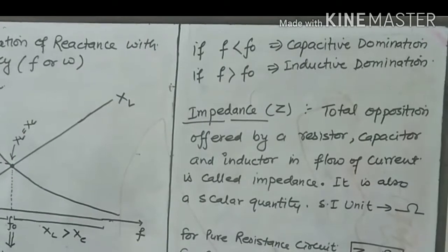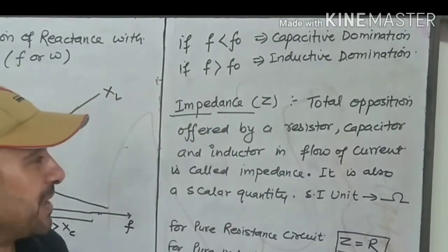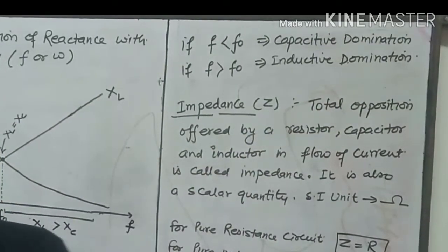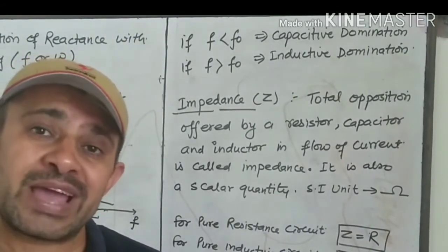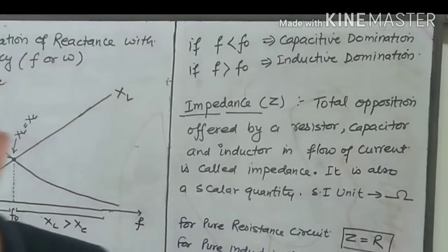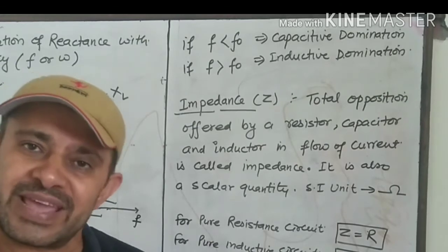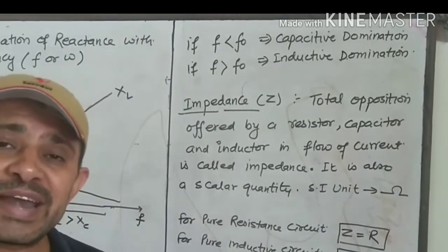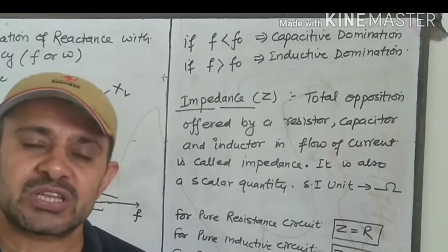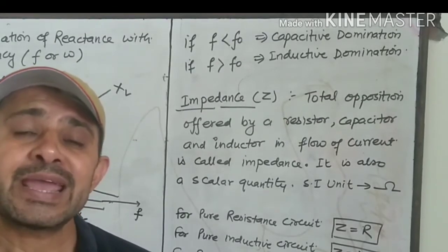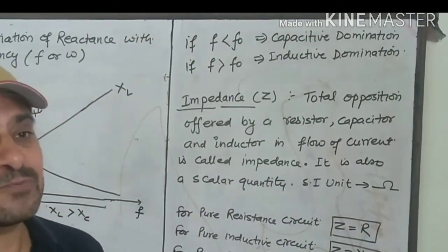Now we move on to a very important topic: impedance. Impedance is denoted by Z and it is the total opposition offered by any combination of resistance, capacitance, or inductance in an AC circuit — whether all three together or individually. Impedance is the net resultant of reactance and resistance — the total resistive and reactive opposition offered in the flow of AC. Impedance is again a scalar quantity with SI unit ohm, and it varies depending on the circuit.